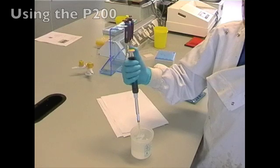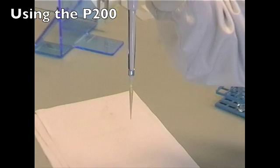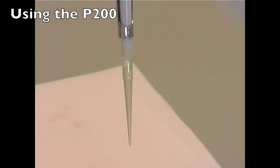If the P1000 you are using has a tip less than one-fifth full, you should be using the P200. Remember the range of the three pipettes and you should have no trouble choosing the correct pipette.